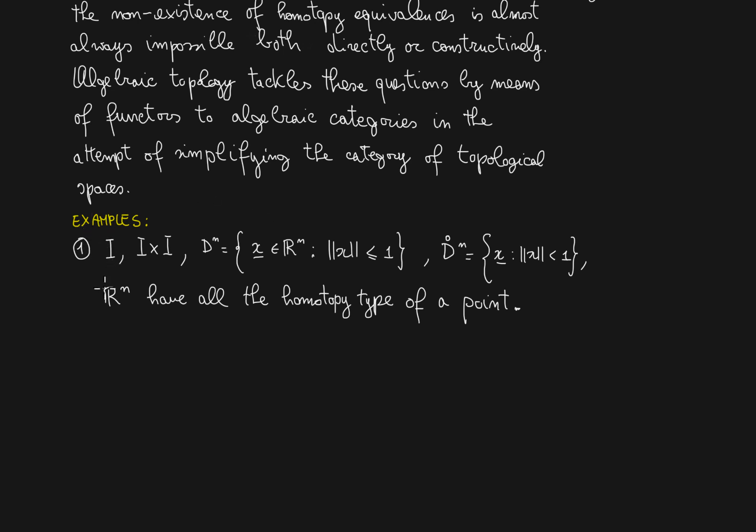Let's see a few examples. First group of examples is the following. We consider the unit interval I, and then its cross product with itself, and then the unit n-dimensional disk dn, and its interior, and also the n-dimensional Euclidean space Rn. So they all have the homotopy type of a point. And this means that from a homotopy type point of view, they are all trivial. There is not much to say about any of them.